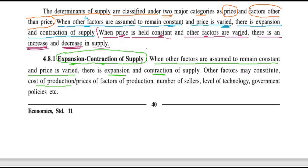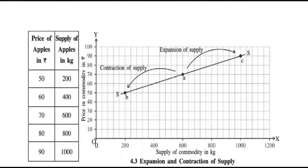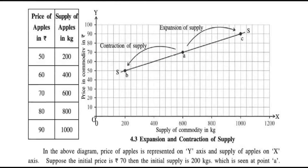The other factors include: cost of production, prices of factor inputs, level of technology, government policies, and future expectations of price. Based on the law of supply, as the price of apples increases, the supply of apples expands — remember, we use the word 'expands', not 'increases', when price varies with other factors constant.